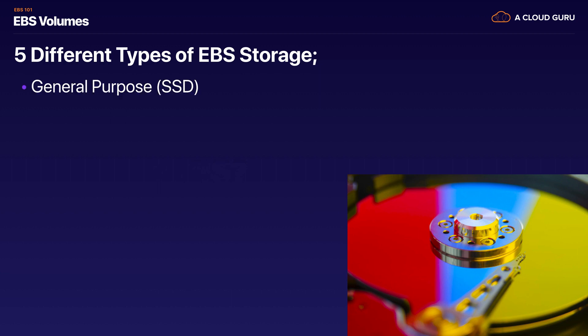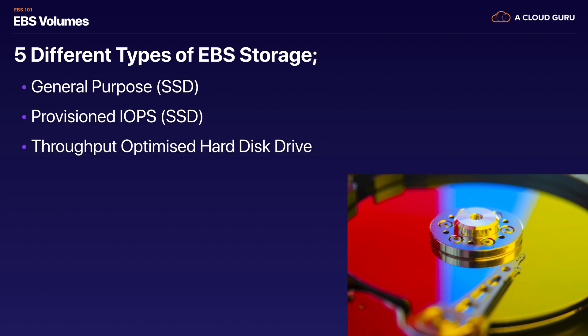We've got general purpose SSD, which is what we've been using so far. We've got provisioned IOPS, which is also SSD — this is where you want really fast input/outputs per second. We then have throughput optimized hard disk drive, which is actually a physical hard disk drive, so it's magnetic, and it's optimized for throughput. We then have our cold hard disk drive, which is also magnetic. And then we also have magnetic.